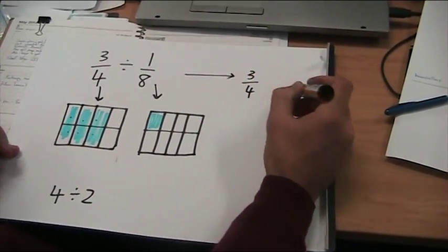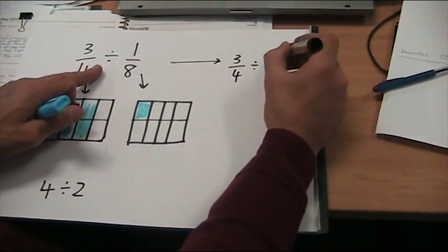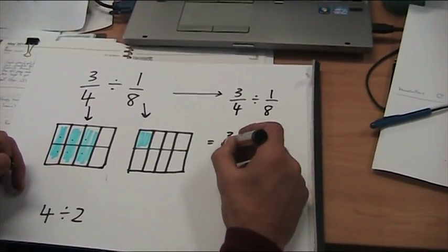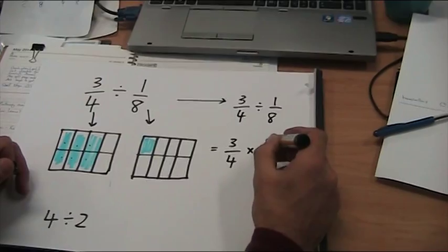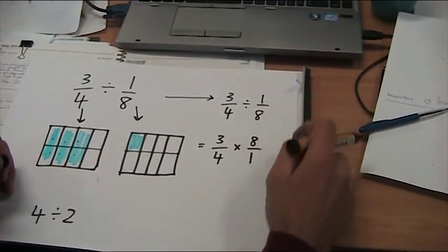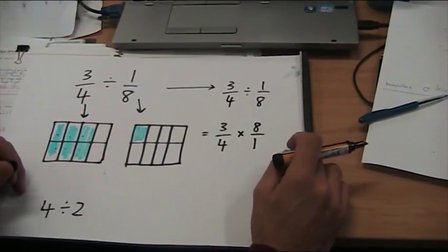So 3 quarters divided by 1 eighth becomes 3 quarters times 8 over 1. You switch that last number.